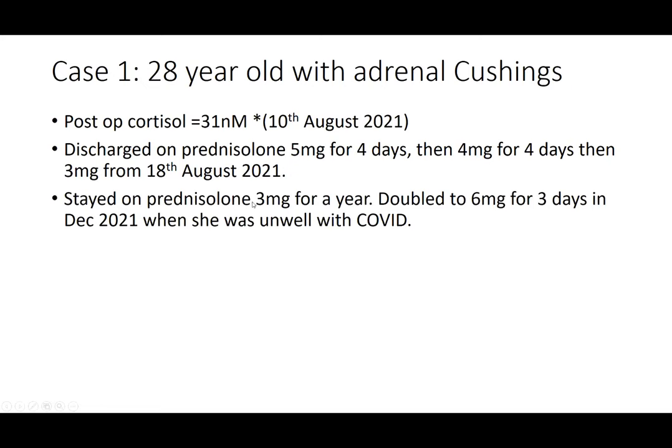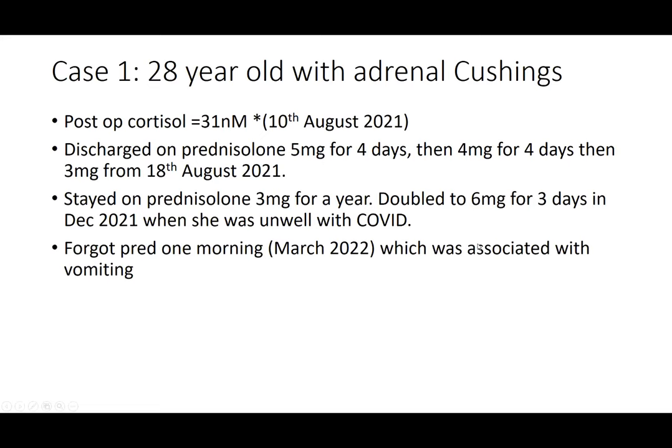She came to clinic 12 months later. She had learned sick day rules from the endocrine nurse before discharge. When she became really ill with COVID in December 2021, she doubled her dose to 6 mg prednisolone, got through it, and went back to 3. She also reported forgetting her prednisolone one morning — she became very unwell, started vomiting, and became dehydrated. The next day she took her prednisolone 3 and felt better.